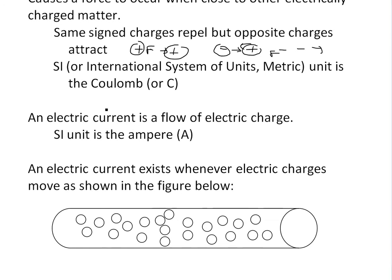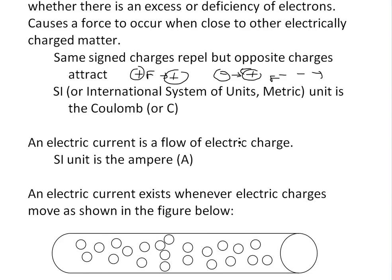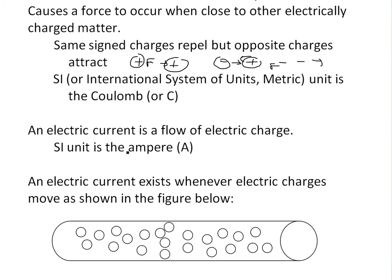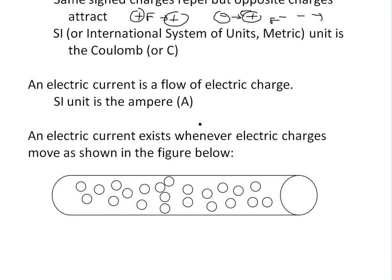An electric current, which is what I'm going to go over right now, is a flow of electric charge. It's actually the rate at which charge is moving across, and the SI unit is the ampere A. I'm not going to go over the definition of that. I'll do that in another video as well.